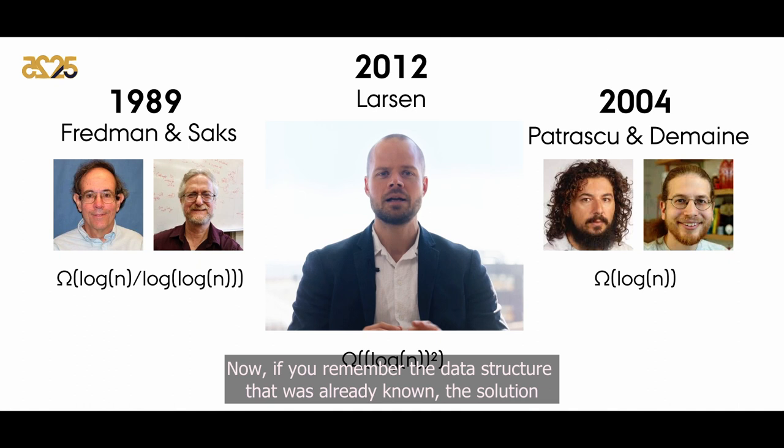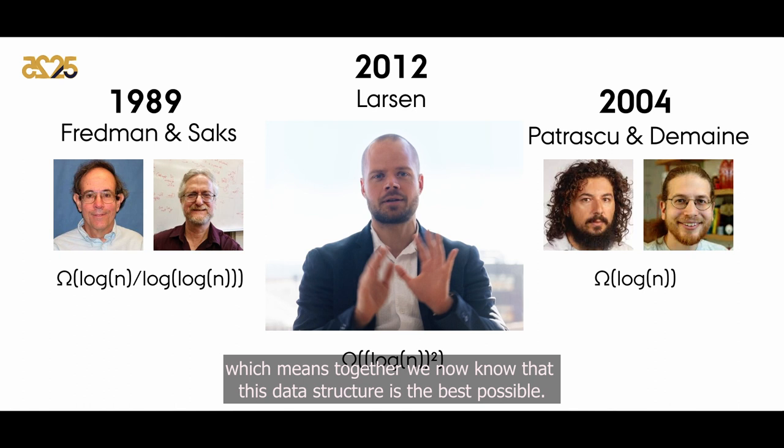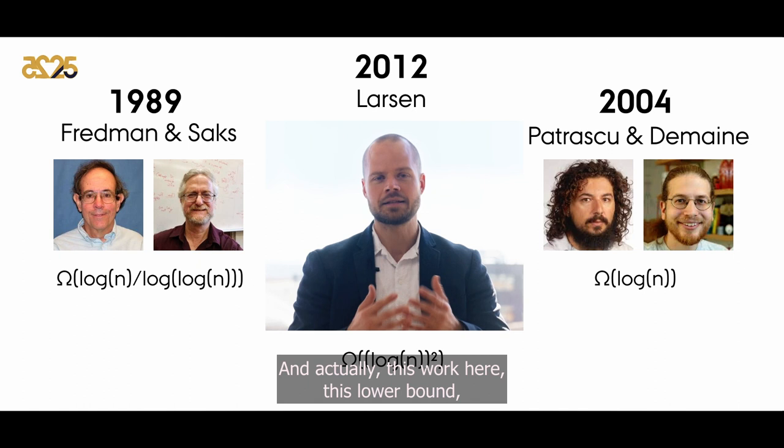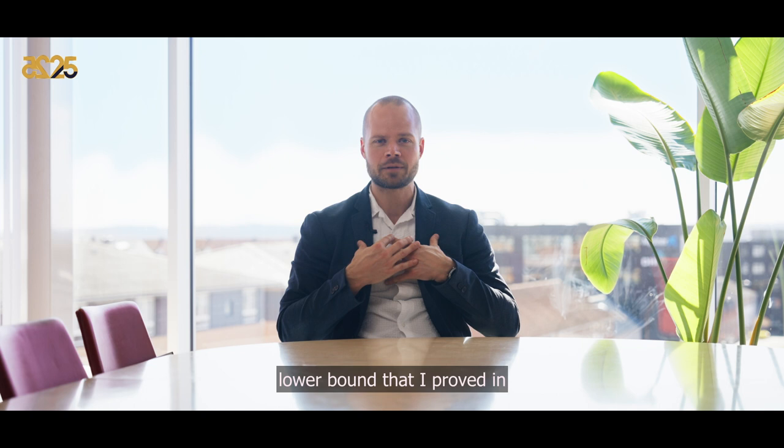If you remember, the data structure that was already known — the solution that people had come up with — also spends log(n)² many operations, which means together we now know that this data structure is the best possible. We can never hope to improve over it in the future. This lower bound was acknowledged by the community with a best paper award. And even to this date, the log(n)² lower bound that I proved is still the strongest known lower bound for any data structure problem, meaning that at Aarhus University, we are still world-leading in proving data structure lower bounds.